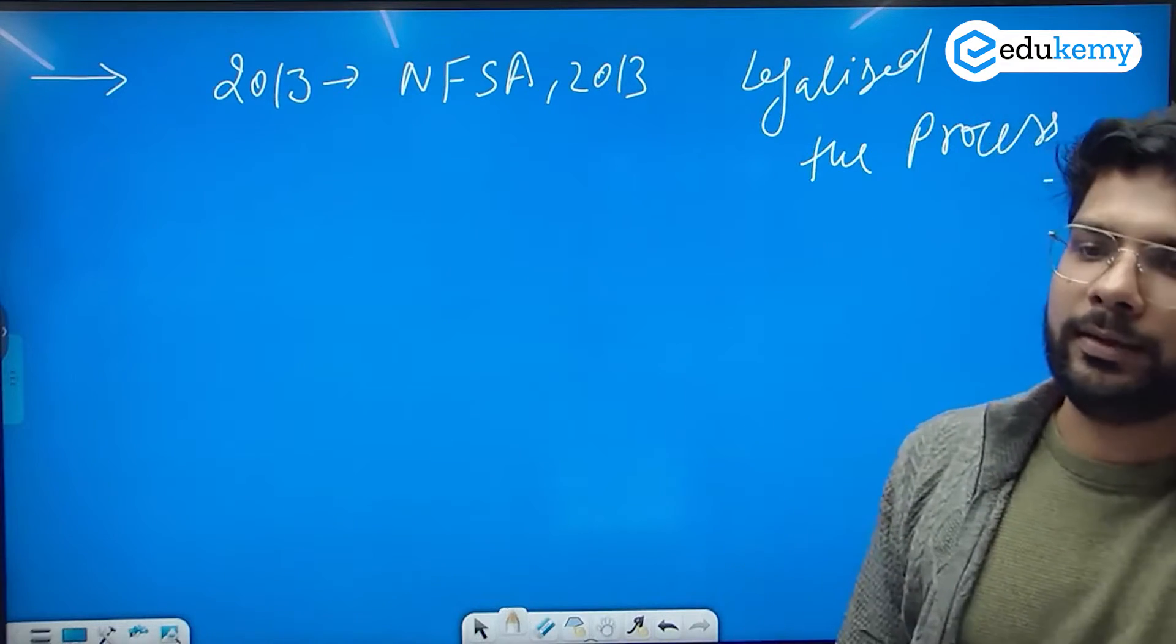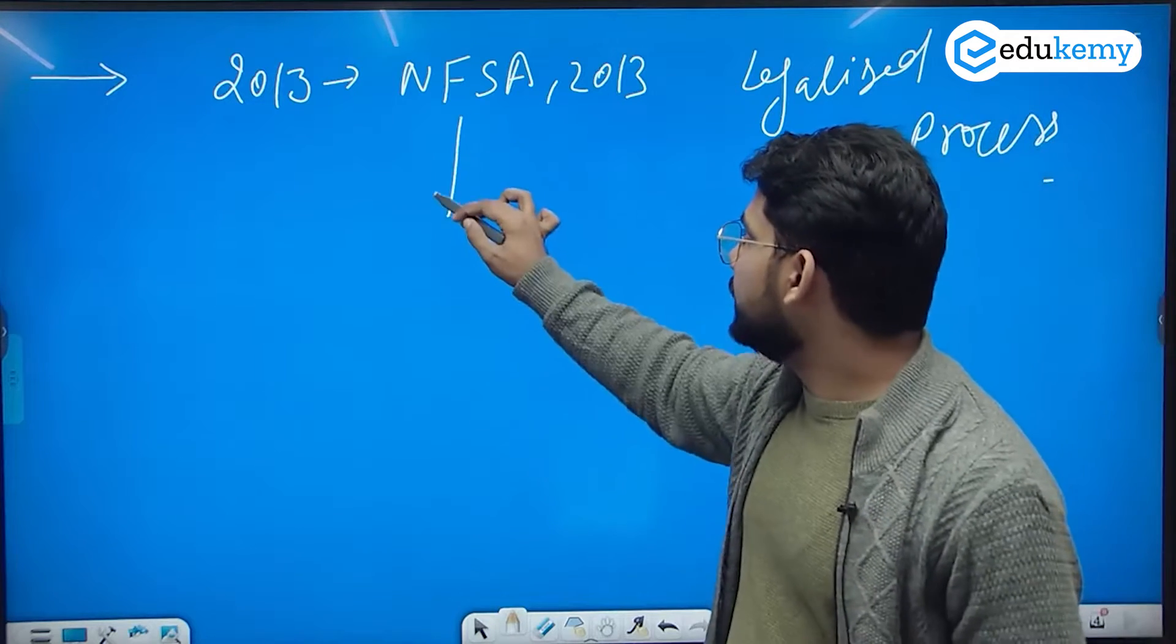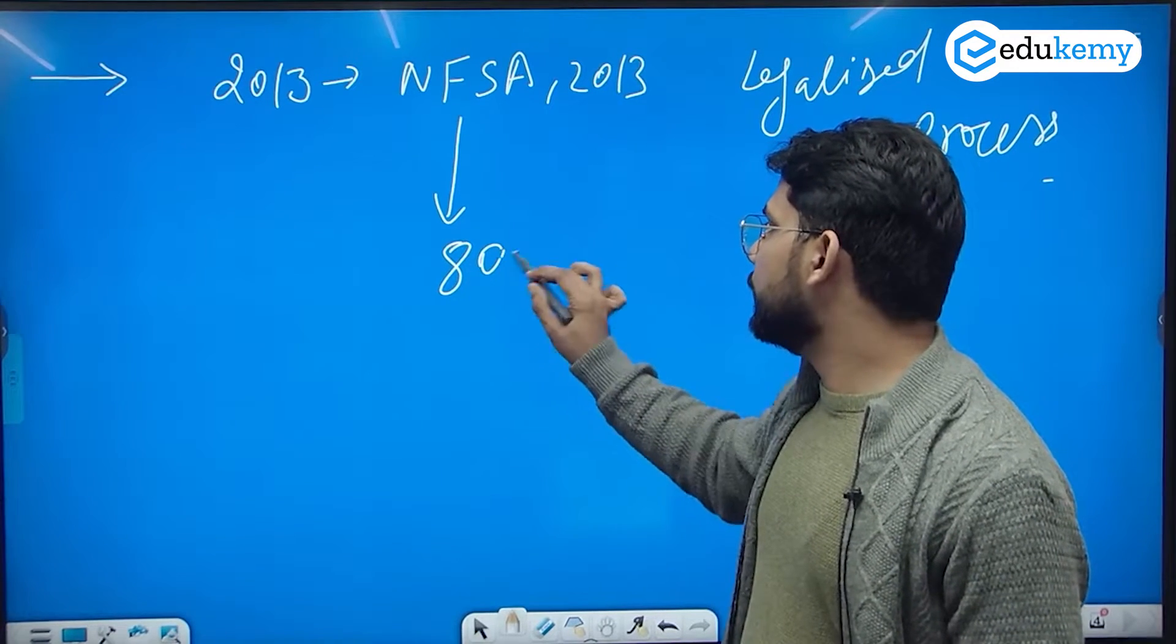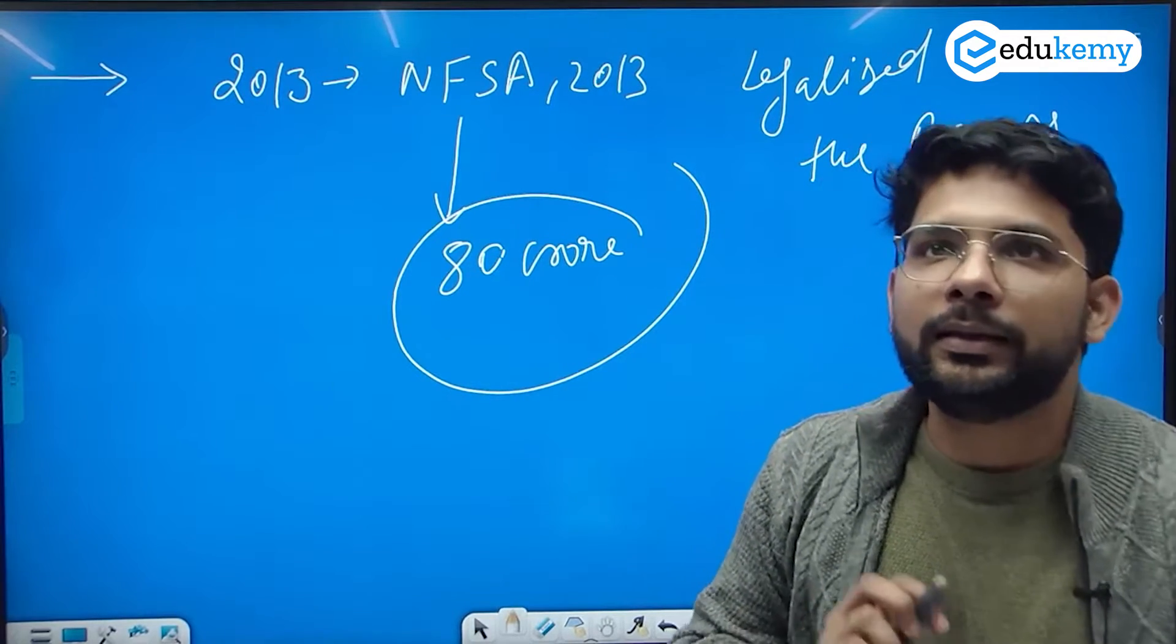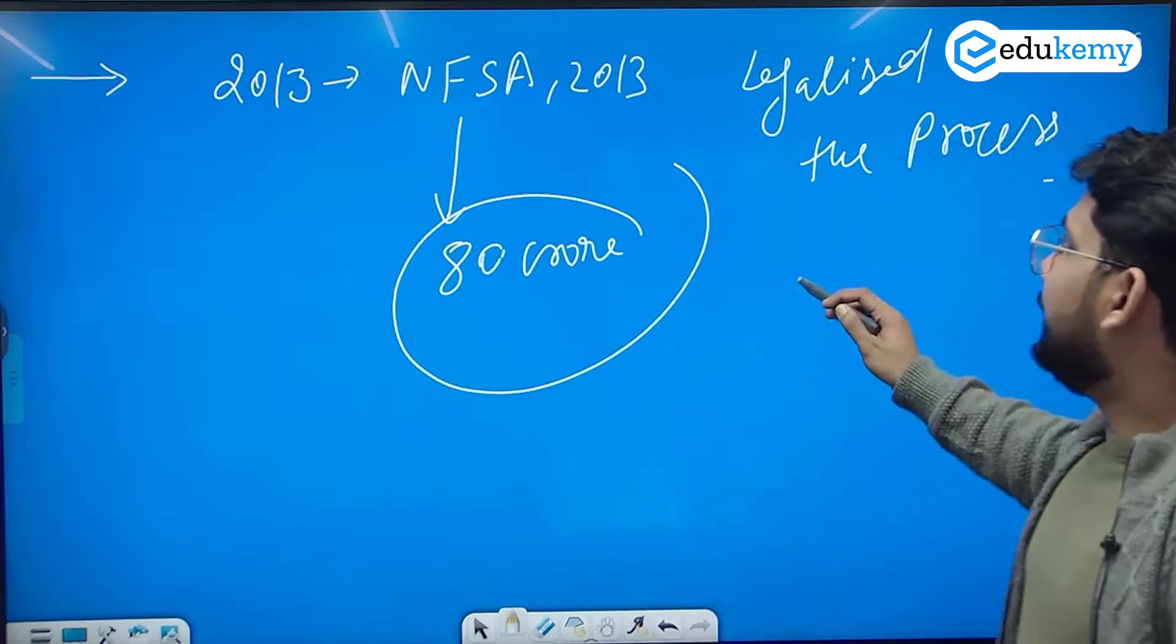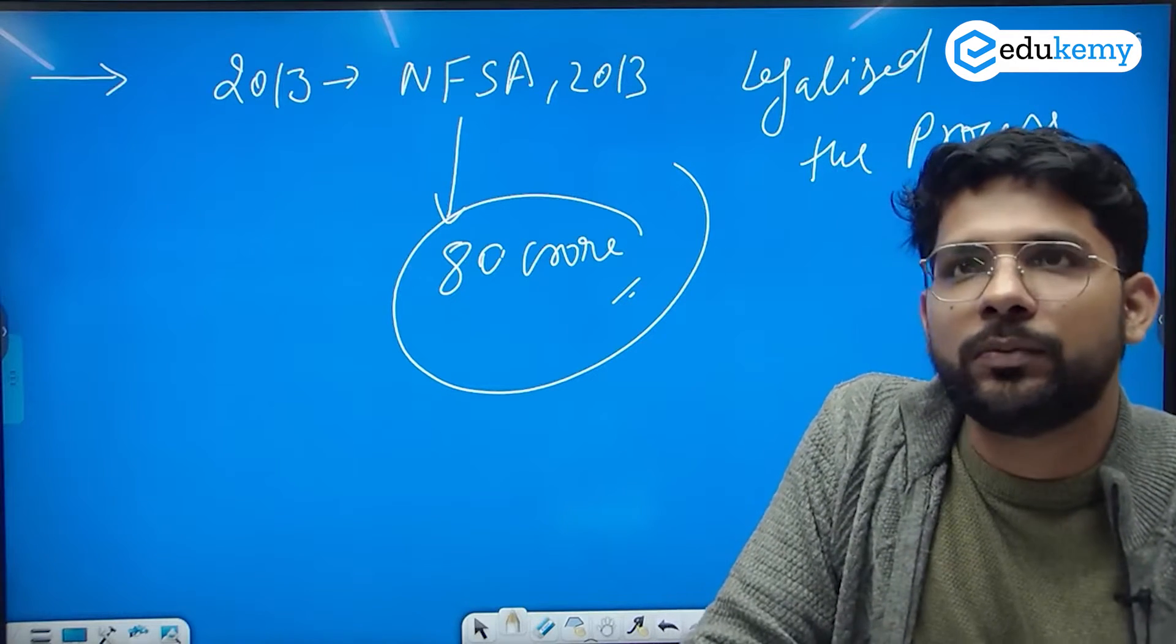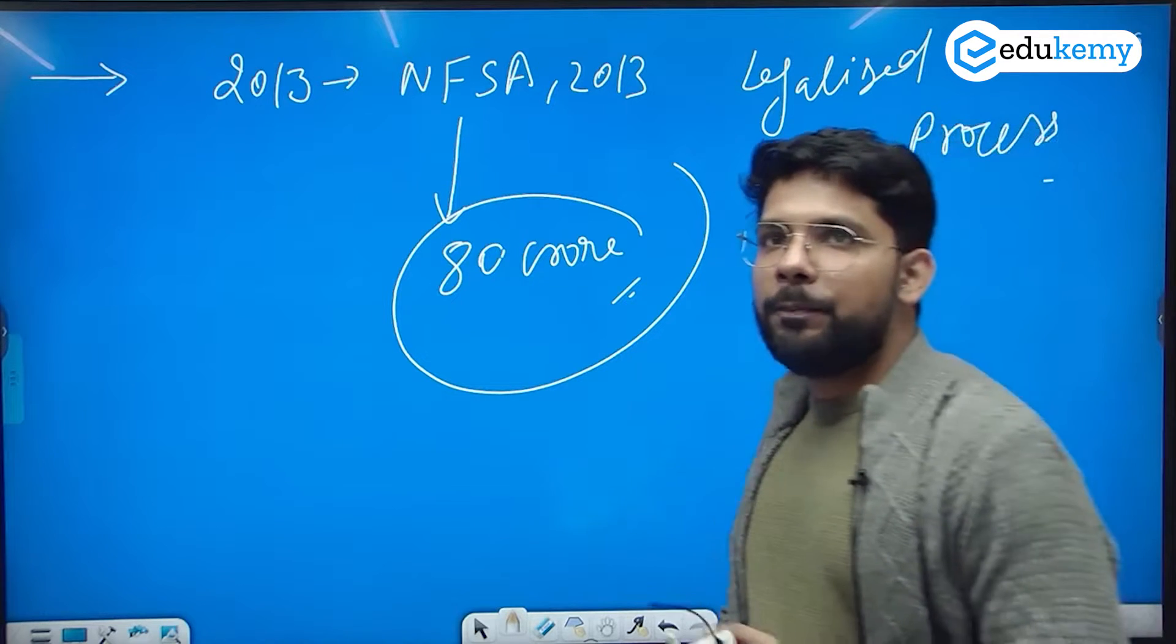Under this 2013 NFSA Act, almost 80 percent of the population, almost 80 crore people, are the beneficiaries. 80 crore people are dependent on NFSA. So this is the historical background of the Public Distribution System in the country.